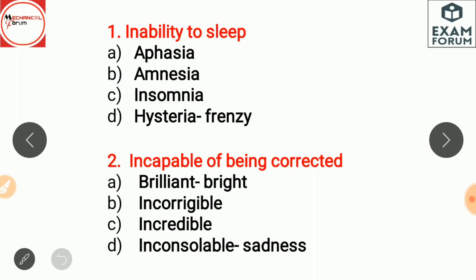Incapable of being corrected — the answer is incorrigible. Brilliant means a bright, clever, or skillful person. Incredible means extremely good or difficult to believe. Inconsolable means extreme sadness — something that is very sad.